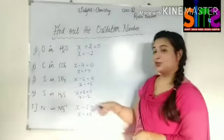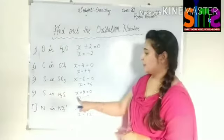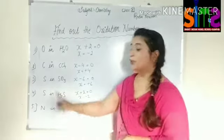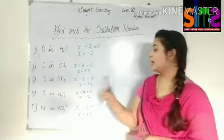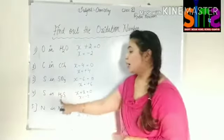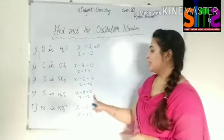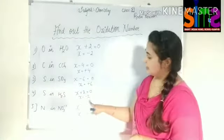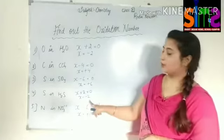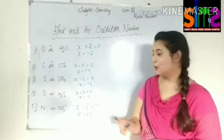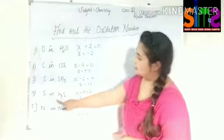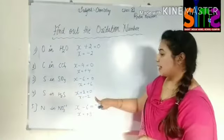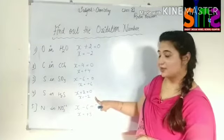Next, find sulfur in H₂S. H₂S equals 0. Plus 2 — 1 hydrogen is plus 1, and 2 hydrogens give plus 2. So it is equal to 0, no charge present. Here we find the value of X: minus 2. Students, you can see that sulfur in H₂S has a minus 2 oxidation state.